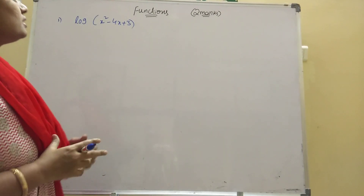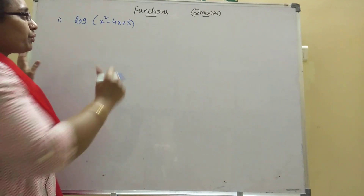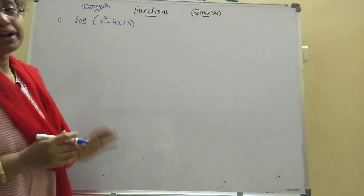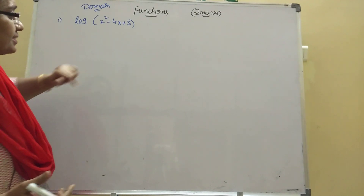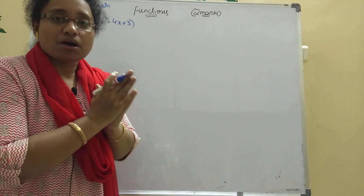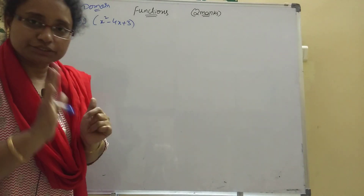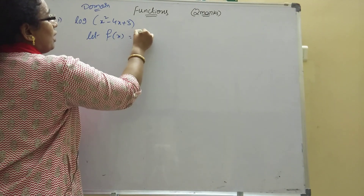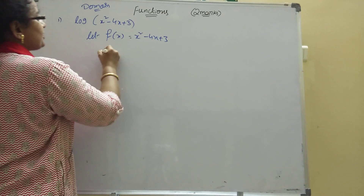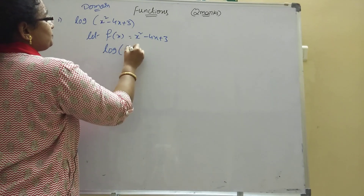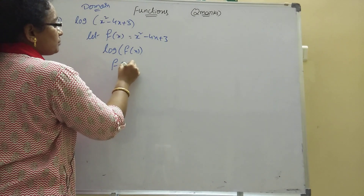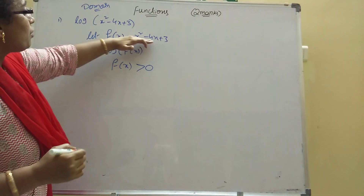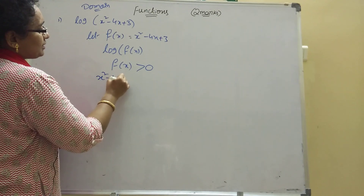Now let's do the sums. First sum: find the domain of log(x² - 4x + 3). Since log of f(x) is given, the condition is f(x) > 0. So let f(x) = x² - 4x + 3, and the condition is f(x) > 0, meaning x² - 4x + 3 > 0.